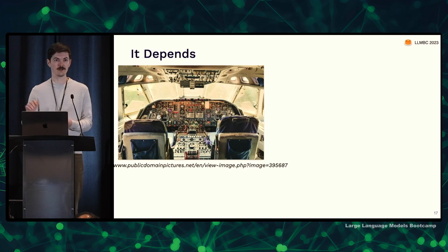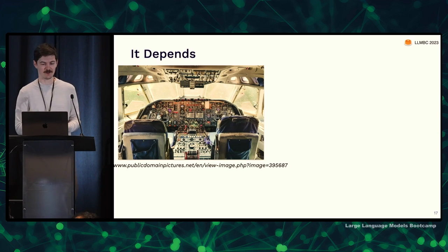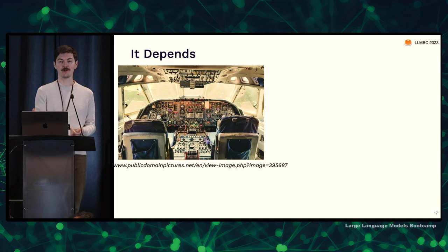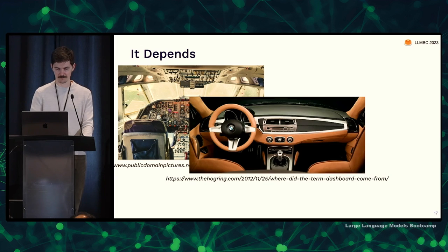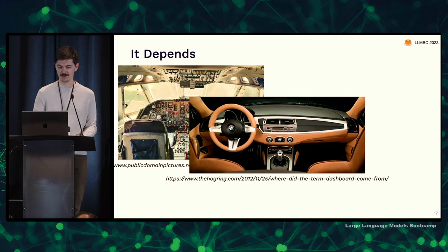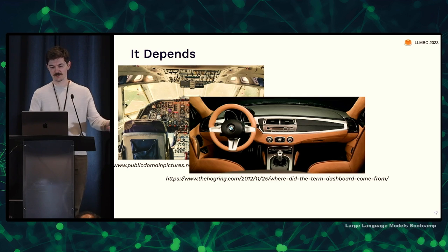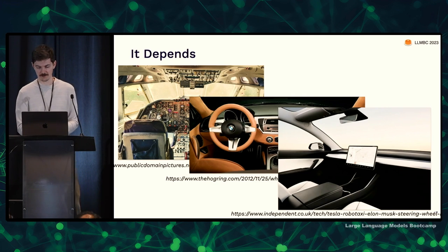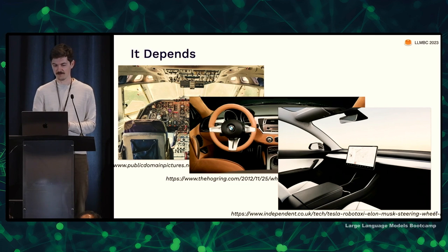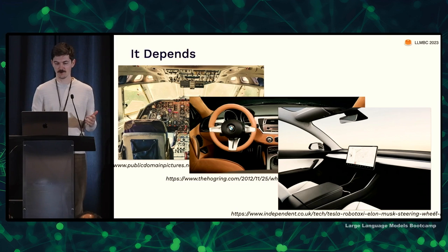Let's say you need a knob per control — immediate access to any possible control of the system. That might be the right interface: a dashboard with a bunch of dials. Or maybe you just need a steering wheel, some pedals, and a gearbox — we've iterated down to that as the right interface for driving. But as technology changes, maybe you don't even need that; maybe you just sit in a seat and get driven. None of these interfaces is better than the other.